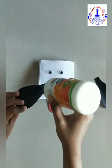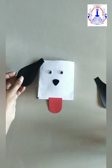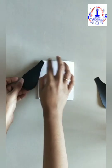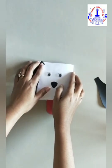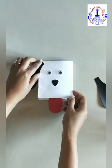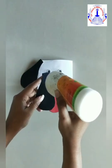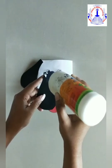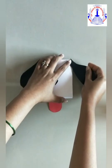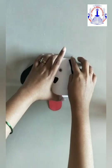And now we are going to stick ears of our dog. We are going to stick it like this. Take a glue, apply it only this much portion, we are going to apply the glue and stick it.